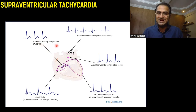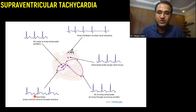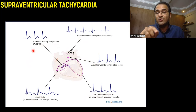Other types of supraventricular tachycardia include atrial fibrillation, atrial tachycardia, AV re-entrant tachycardia, and atrial flutter. But we are going to mainly focus on AV nodal re-entrant tachycardia, which is the most common form of supraventricular tachycardia.